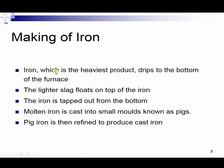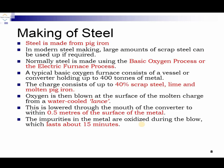Iron, which is the heaviest product, drips down to the bottom of the furnace. The lighter slag floats on top of the iron. The iron is tapped out from the bottom, and molten iron is cast into small moulds known as pigs. Pig iron is then refined to produce cast iron, and from cast iron we convert it into steel.